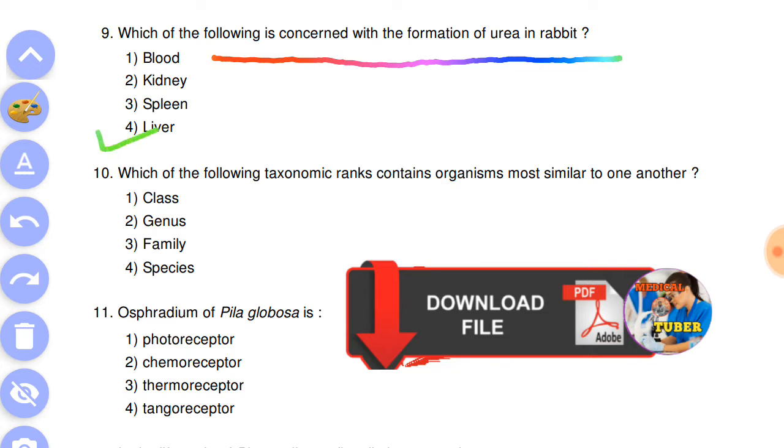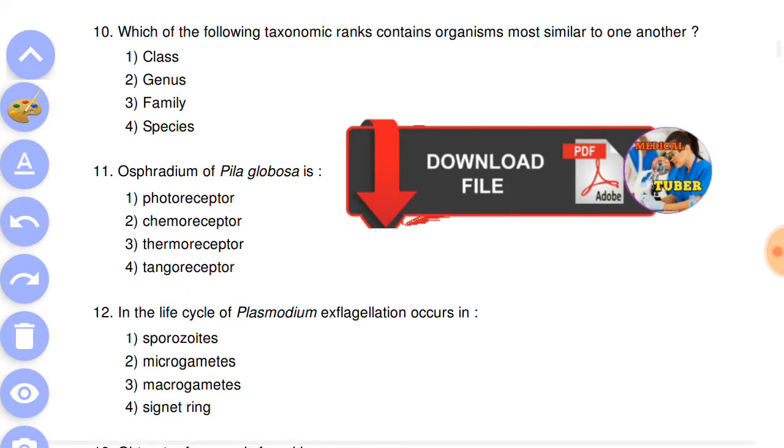Question number 10: which of the following taxonomic ranks contains organisms most similar to one another? Answer is number four, species.